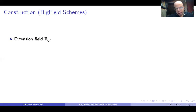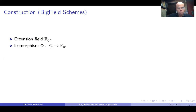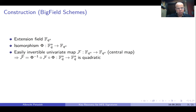Of course, we have to ensure that the owner of the private key can invert the system efficiently. One of the ideas to do this is the so-called big field approach, where we have an extension field F_q^n, an isomorphism phi between the vector space F_q^n and the extension field. We have an easily invertible univariate map f over the extension field, which is called the central map. Due to the special structure of this central map, the map f-bar, which is defined as phi to the minus 1 composed with f composed with phi, is a quadratic map over the vector space F_q^n.